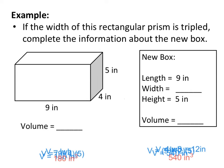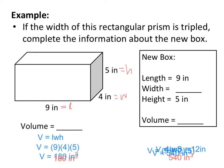This first example says that if the width of this rectangular prism is tripled, complete the information about the new box. First, we need to find the volume of this rectangular prism. Remember that the volume formula is length times width times height. We're going to substitute in for our variables: a length of 9, a width of 4, and a height of 5 inches.